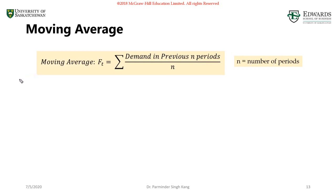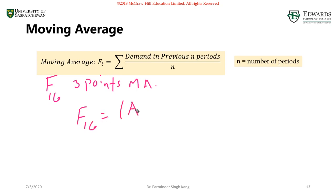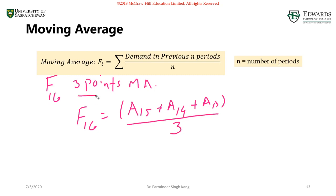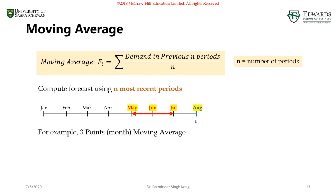In moving average, to forecast for the current period we use the previous N period values. For example, if the question asks for the forecast for period 16 using a three-point moving average, F16 equals actual for period 15 plus actual for period 14 plus actual for period 13, divided by three. I'm taking the average of the previous three points. If it's a five-point moving average, I take the average of the previous five points.